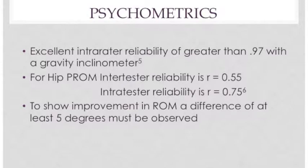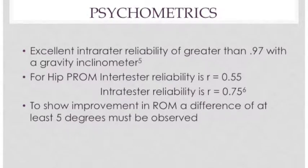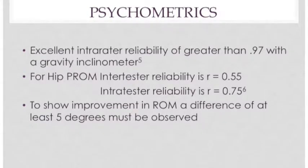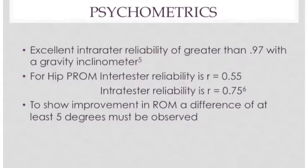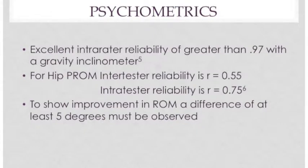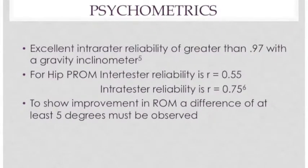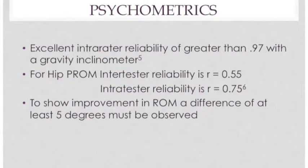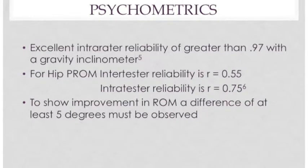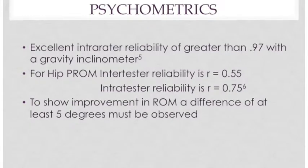The psychometrics of the hamstring length assessment show excellent intra-grader reliability of greater than 0.97 with a gravity inclinometer. For hip passive range of motion, intra-tester reliability is R equals 0.55 and inter-tester reliability is R equals 0.75. To show improvement in range of motion, a difference of at least 5 degrees must be observed.